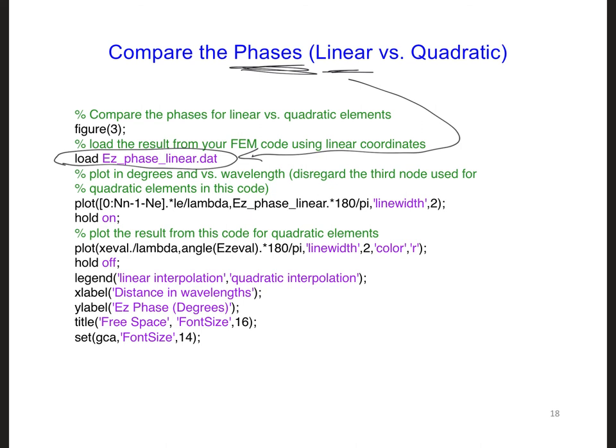So at this point, go ahead and incorporate this into your code, or unless you write your own way of plotting out your results. And run your code and see if the quadratic elements provide a better result than the linear elements.